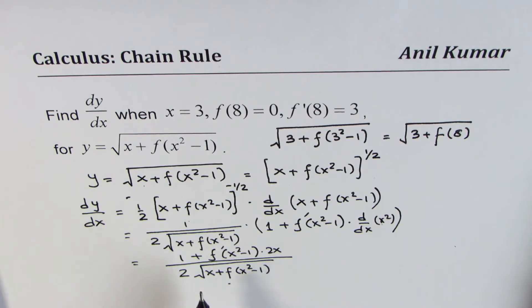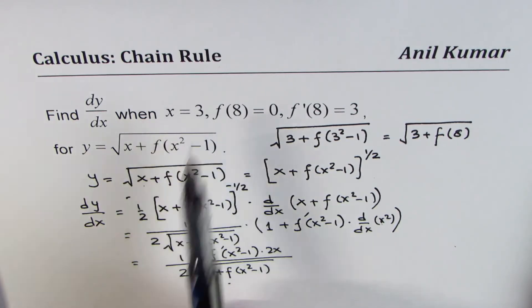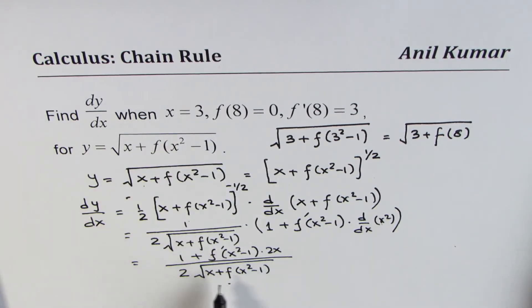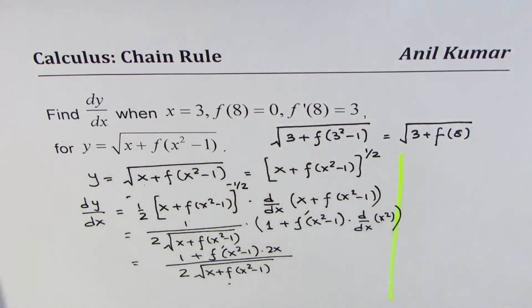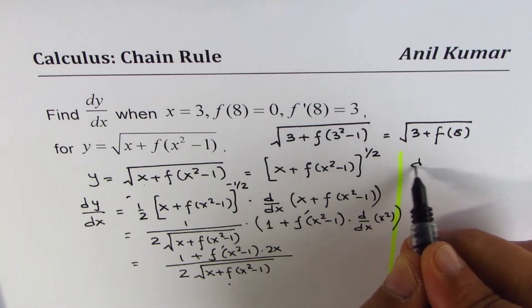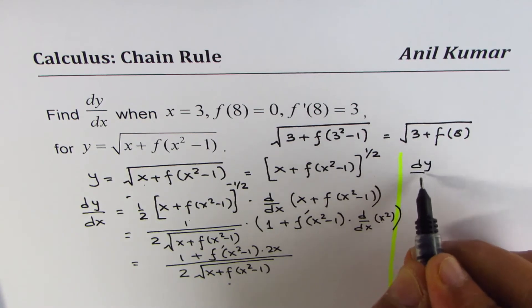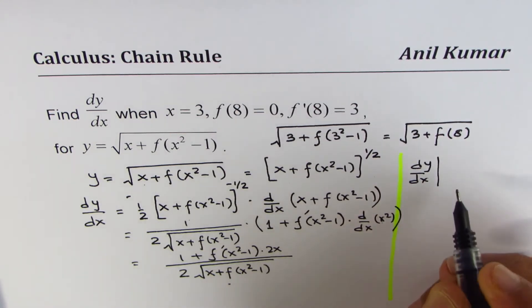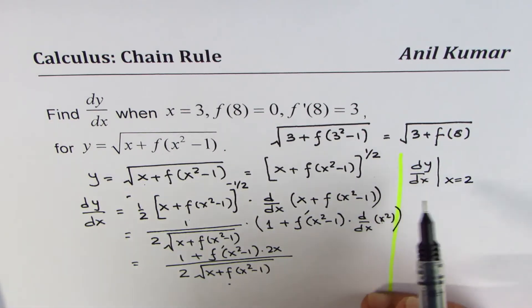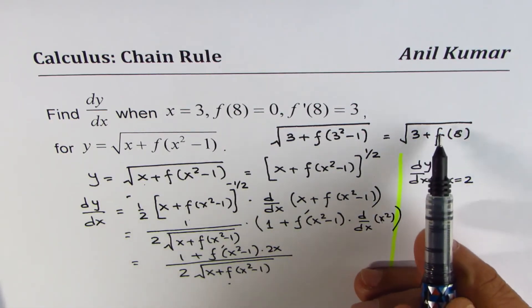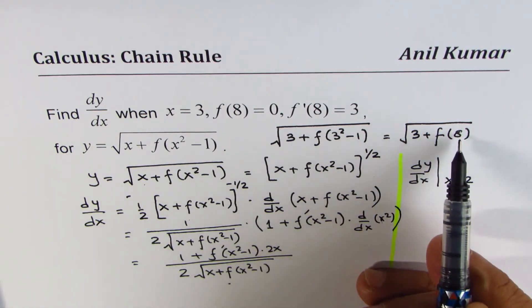We have found the derivative, and now we need to evaluate it at x equals 3. Replacing x with 3, we already noted that the inside term becomes 3 plus f(3² − 1) equals 3 plus f(8).